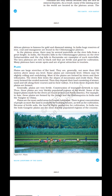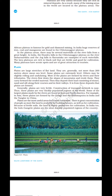Thus these plains are very thickly populated regions of the world. Some of the largest plains made by rivers are found in Asia and North America. In Asia, these plains are formed by the Ganga and the Brahmaputra in India and the Yangtze in China. Plains are the most useful areas for human habitation — there is a great concentration of people, as more flat land is available for building houses and for cultivation. Because of fertile soils, the land is highly productive. In India, the Indo-Gangetic plains are the most densely populated regions of the country.